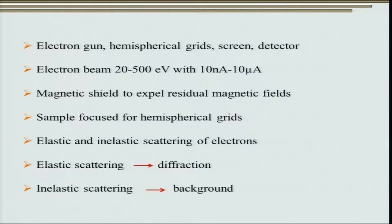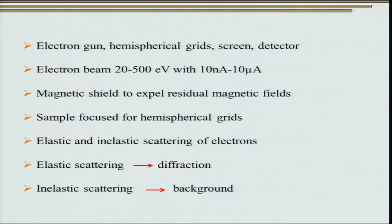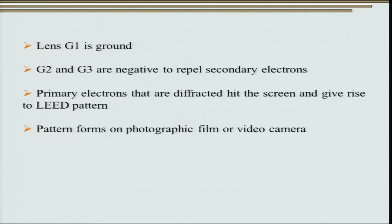The instrumentation is very simple: all we need is an electron gun, hemispherical grids, a screen, and a detector. The electron beam has energy of about 20 to 500 electron volts with current of 10 nanoamperes to 10 microamps. A very strong magnetic shield is needed to expel residual magnetic fields. The sample has to be focused for the hemispherical grids. The elastically scattered electrons which carry all the diffraction information reach the screen, while the inelastically scattered electrons are reflected off by keeping G2 and G3 at negative potential.